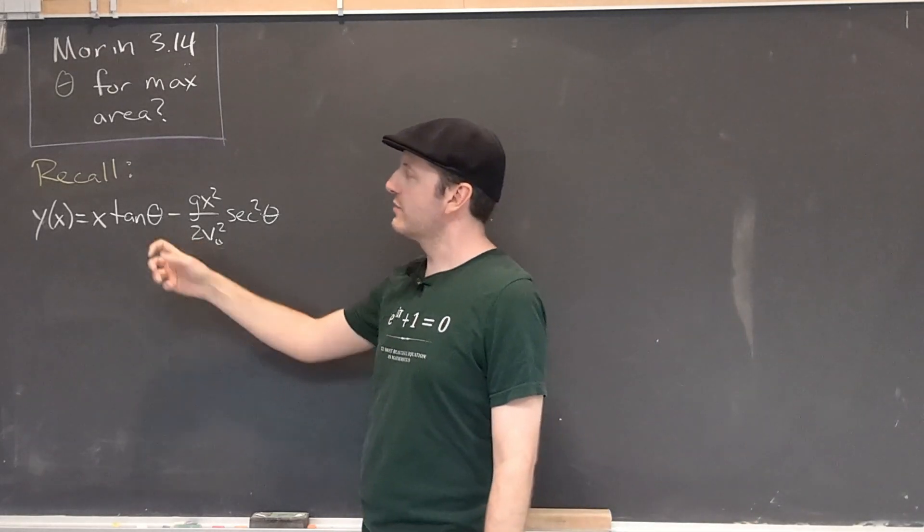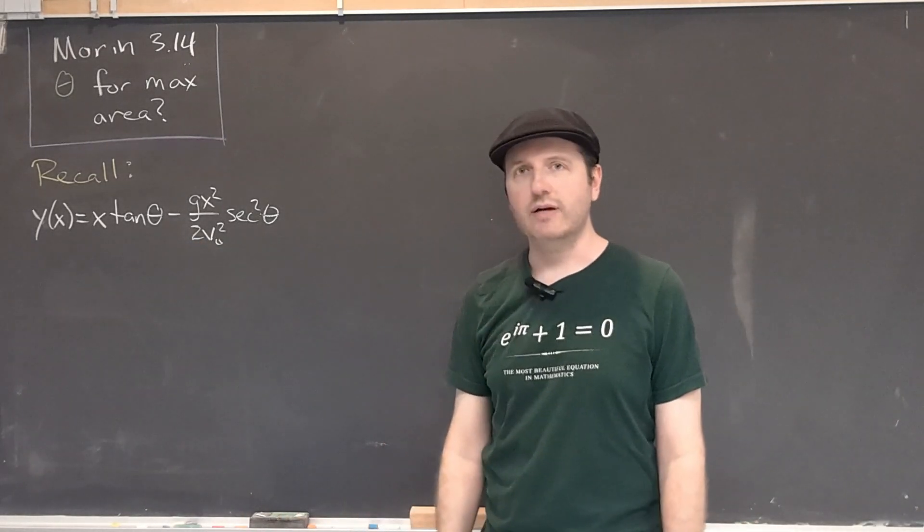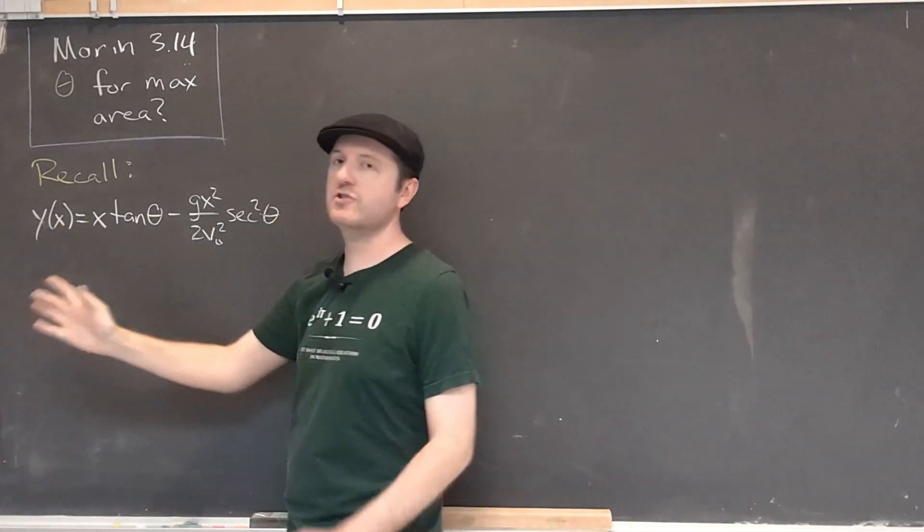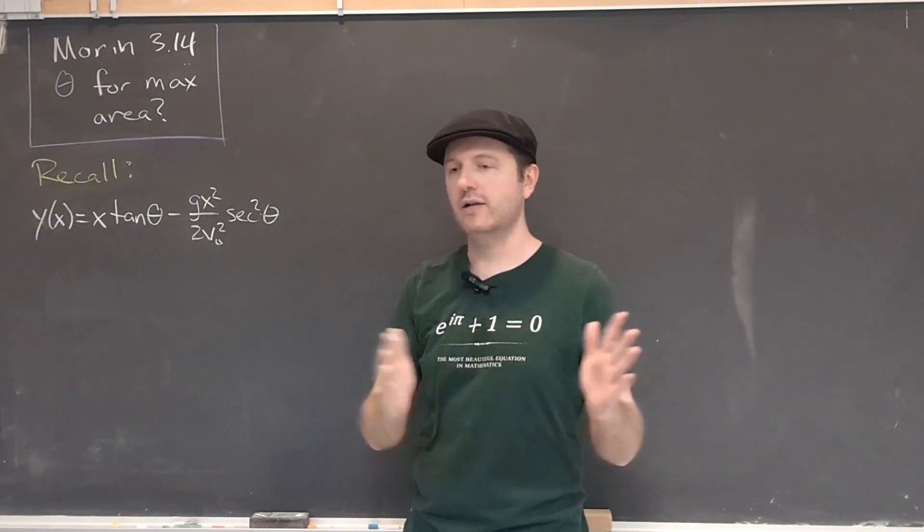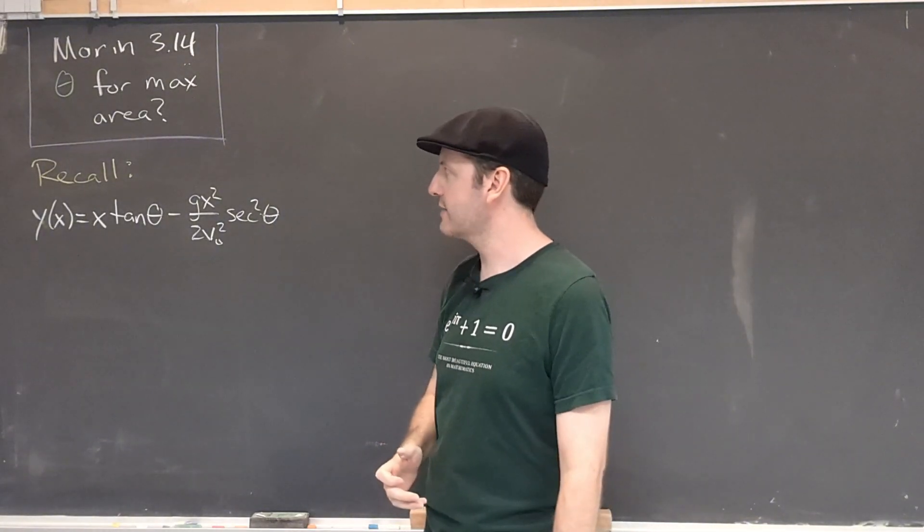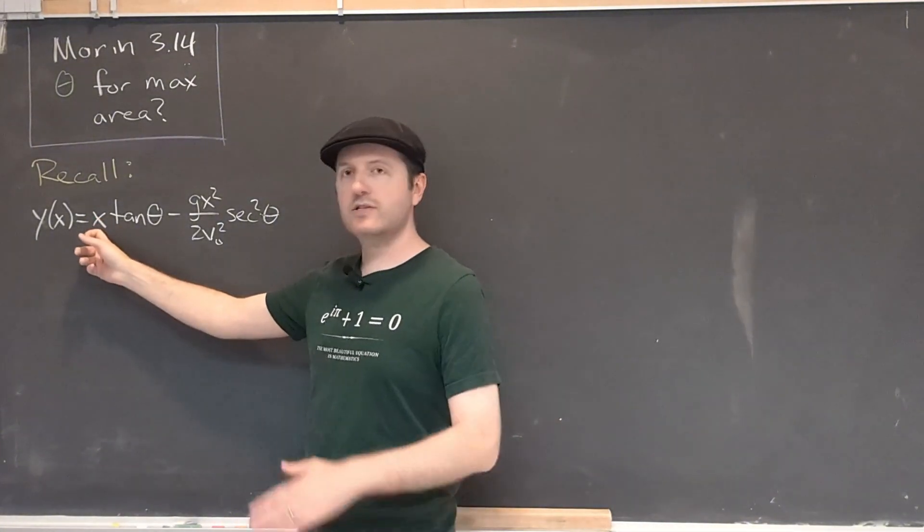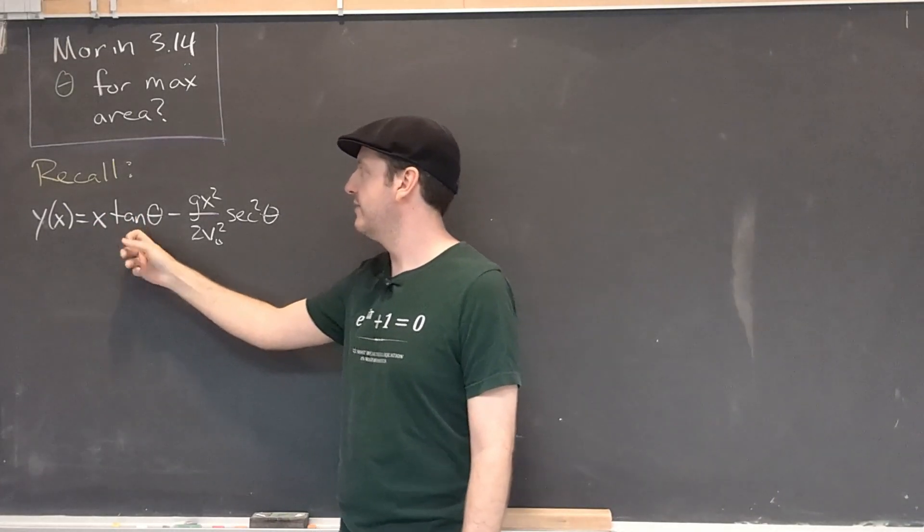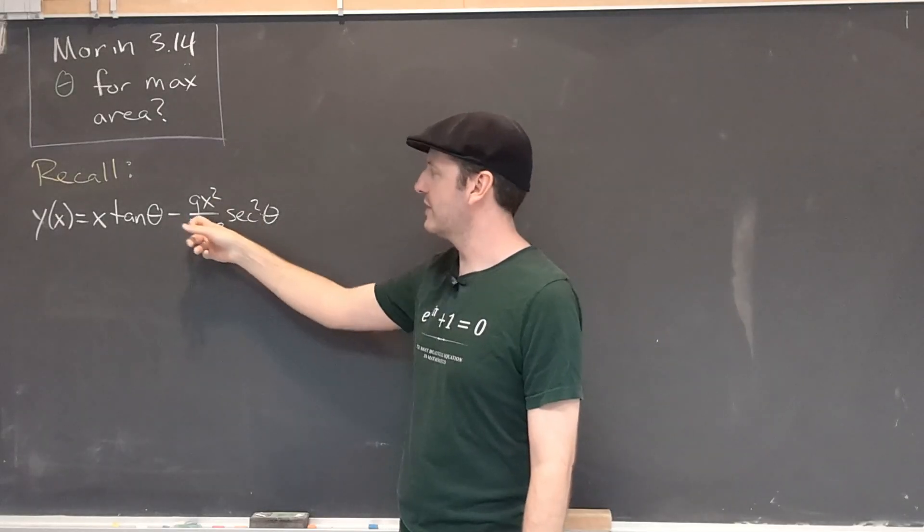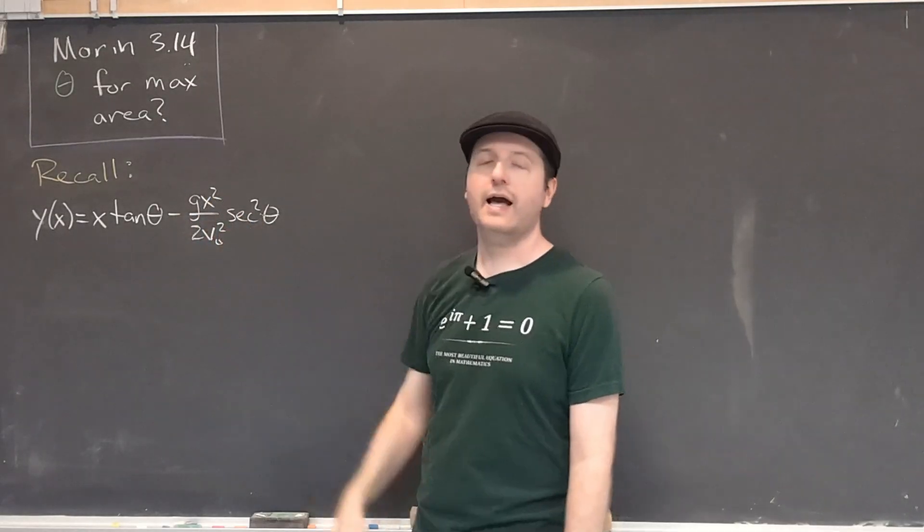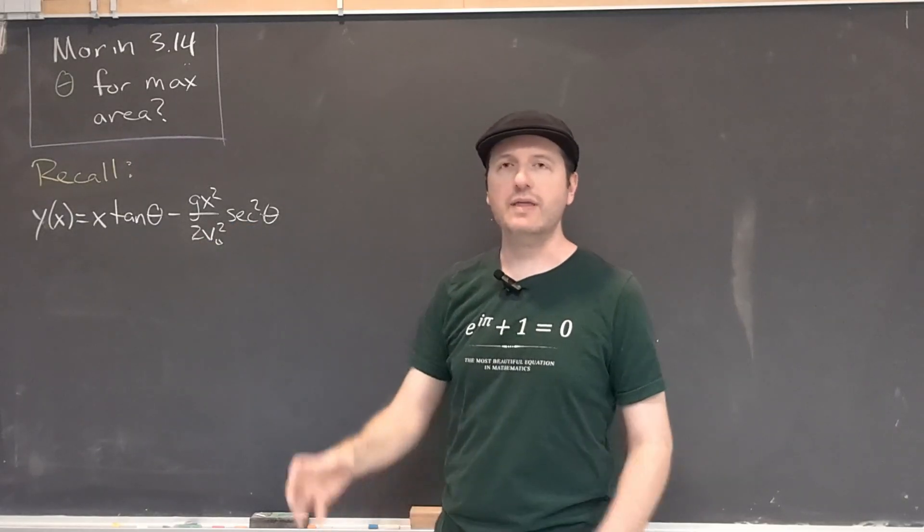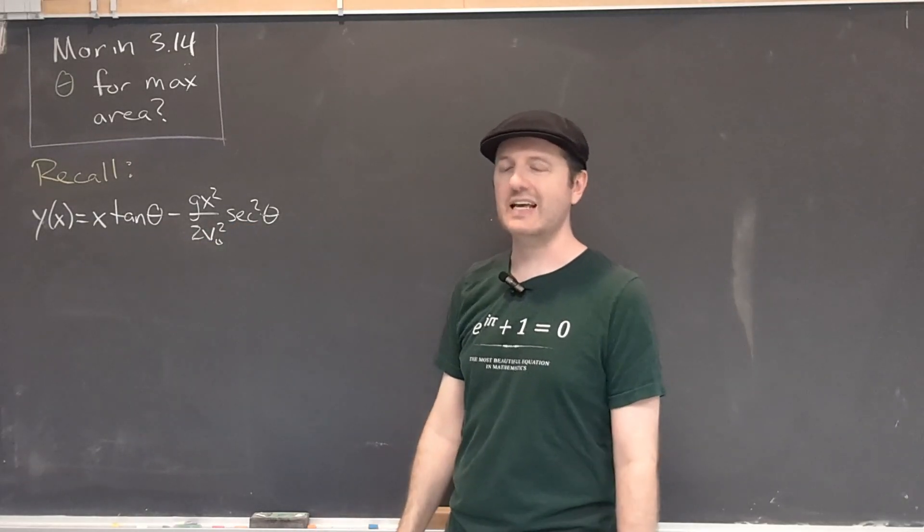Recall that we derived the trajectory equation. This is the actual equation of the height of the projectile as a function of the position from its launch point: x times the tangent of the launch angle minus this quadratic term, which is g x squared over 2v₀ squared. And I decided to write the 1 over cosine squared as secant squared.